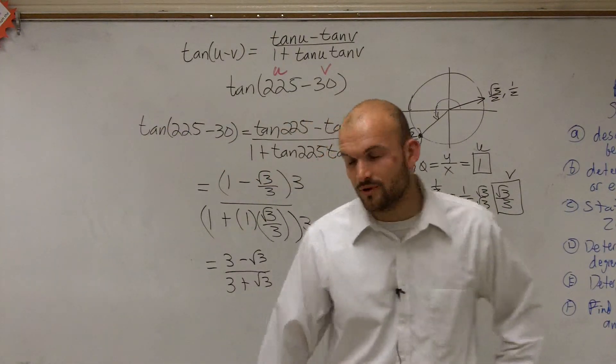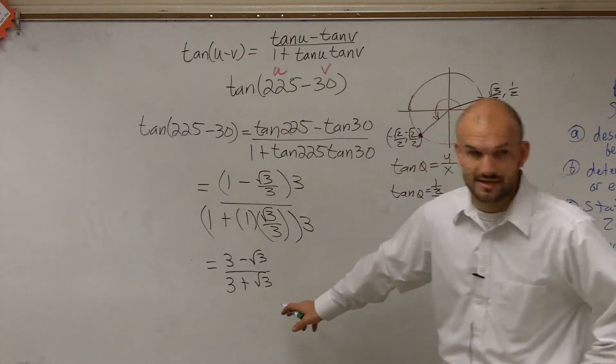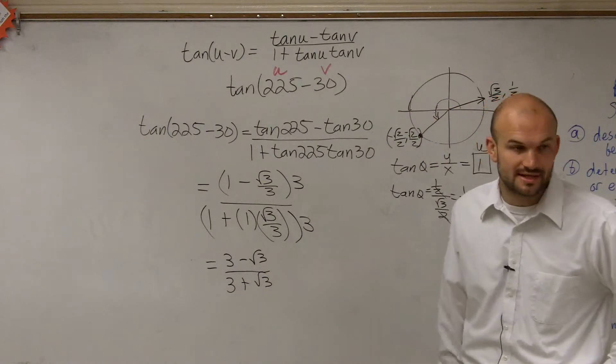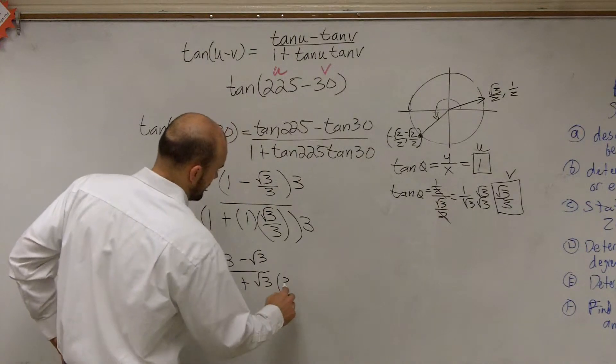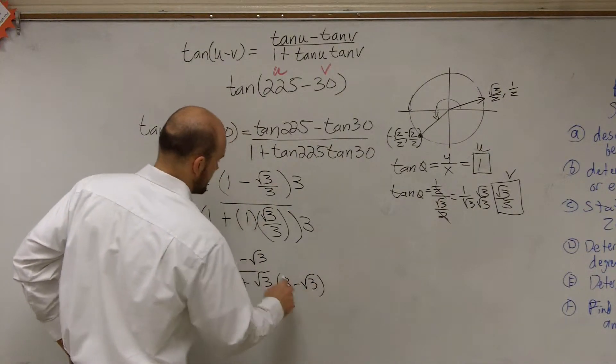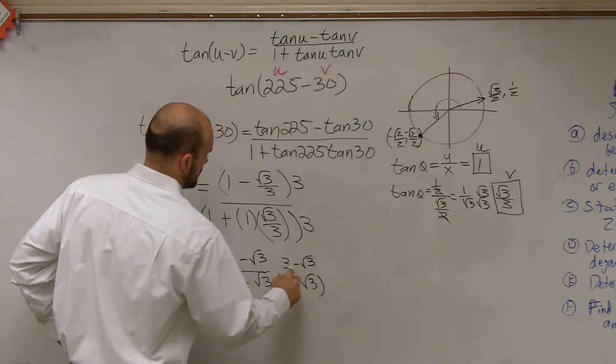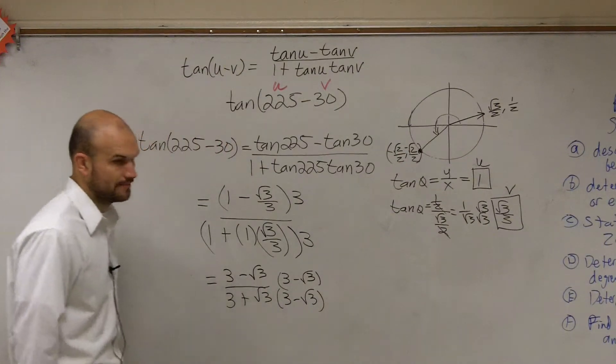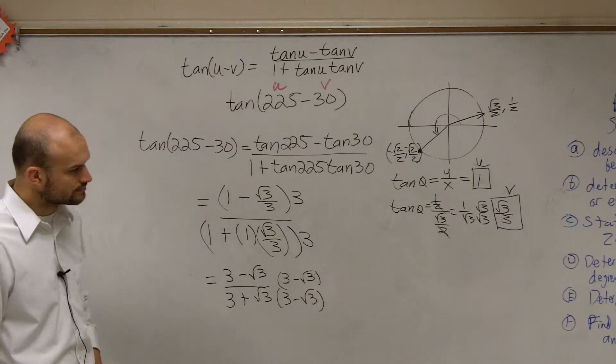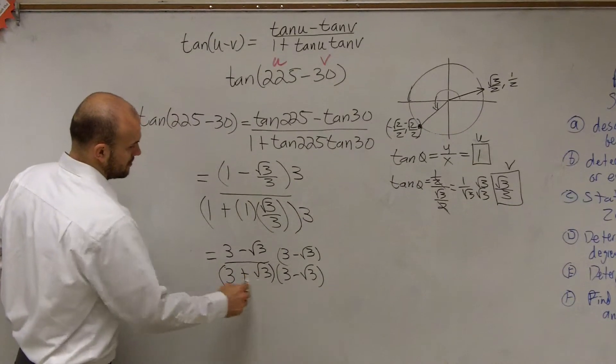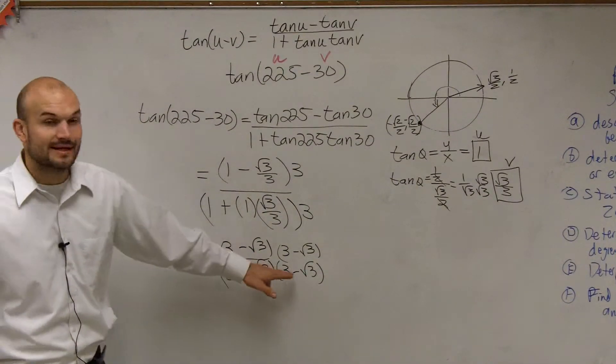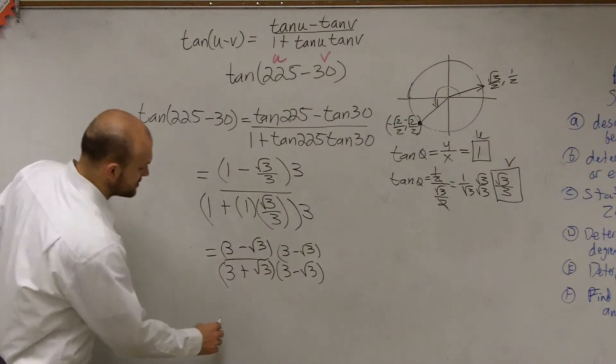What we do need to do to get rid of this now is we need to rationalize the denominator. So to do that, I need to multiply by 3 minus the square root of 3 on your top and bottom. And when you multiply, put those in there, multiply here, you notice this is a difference of two squares.